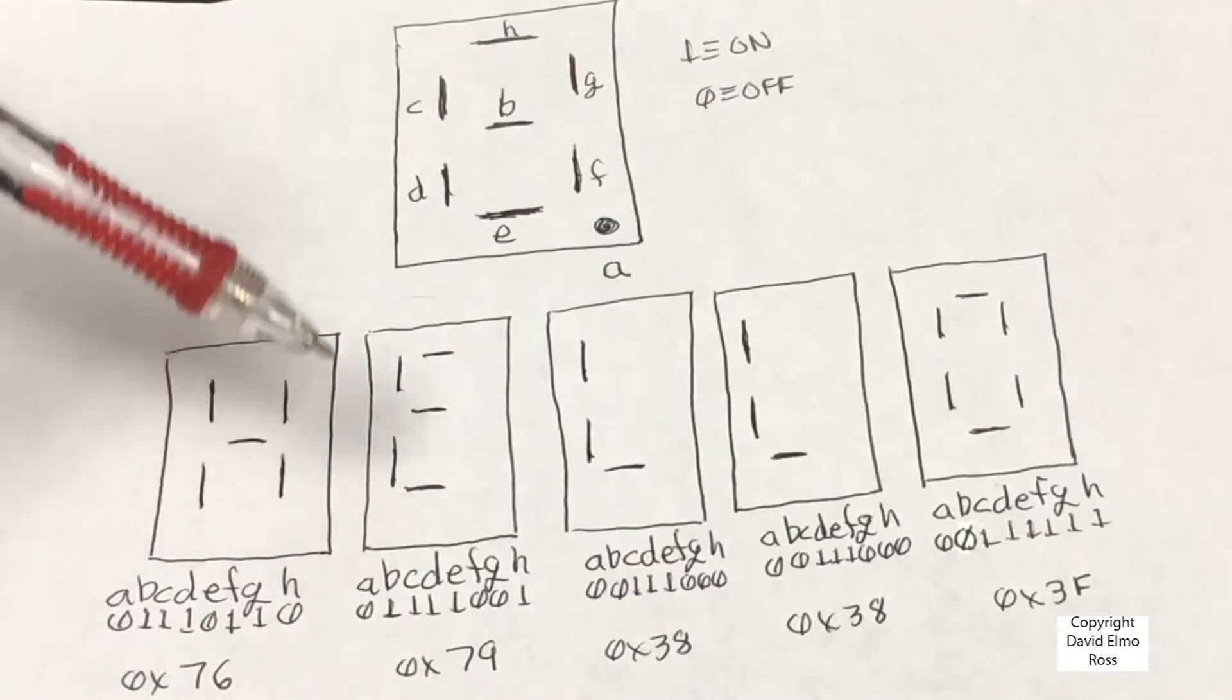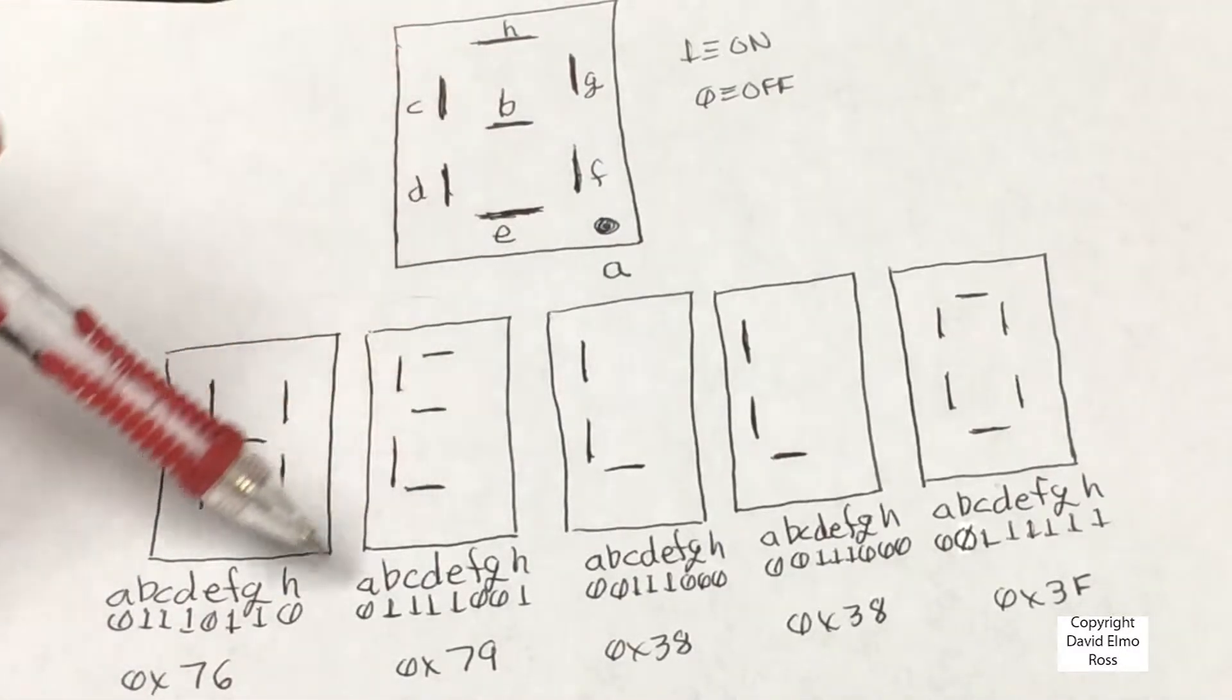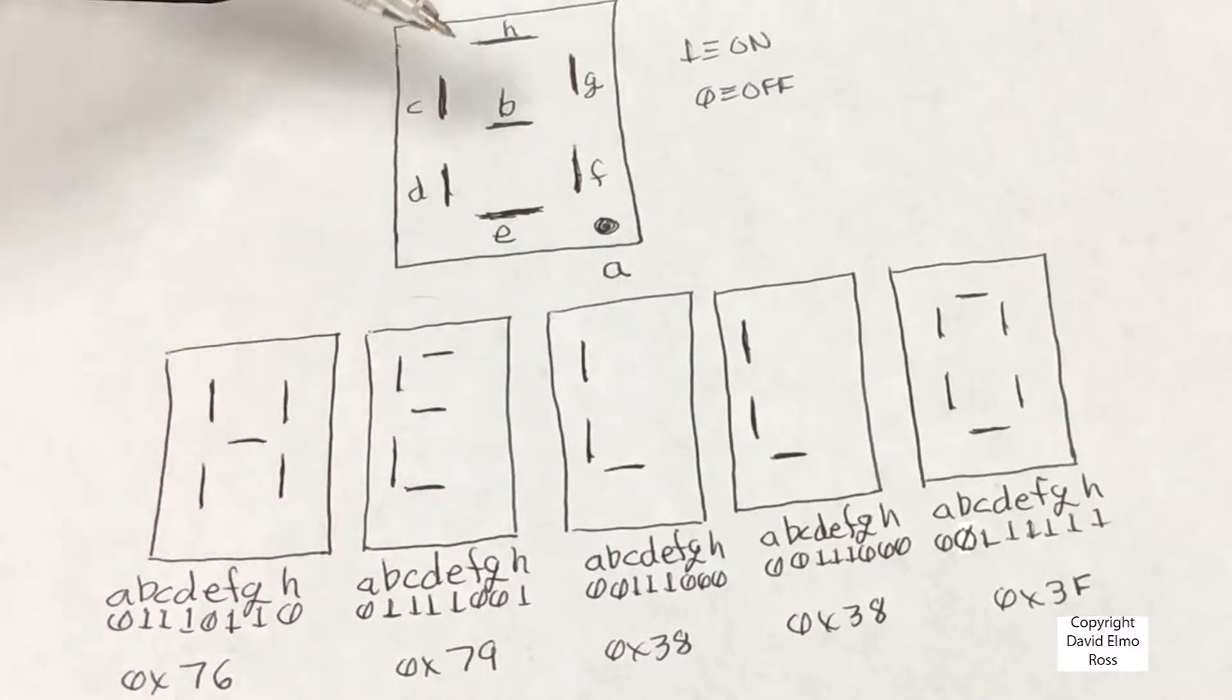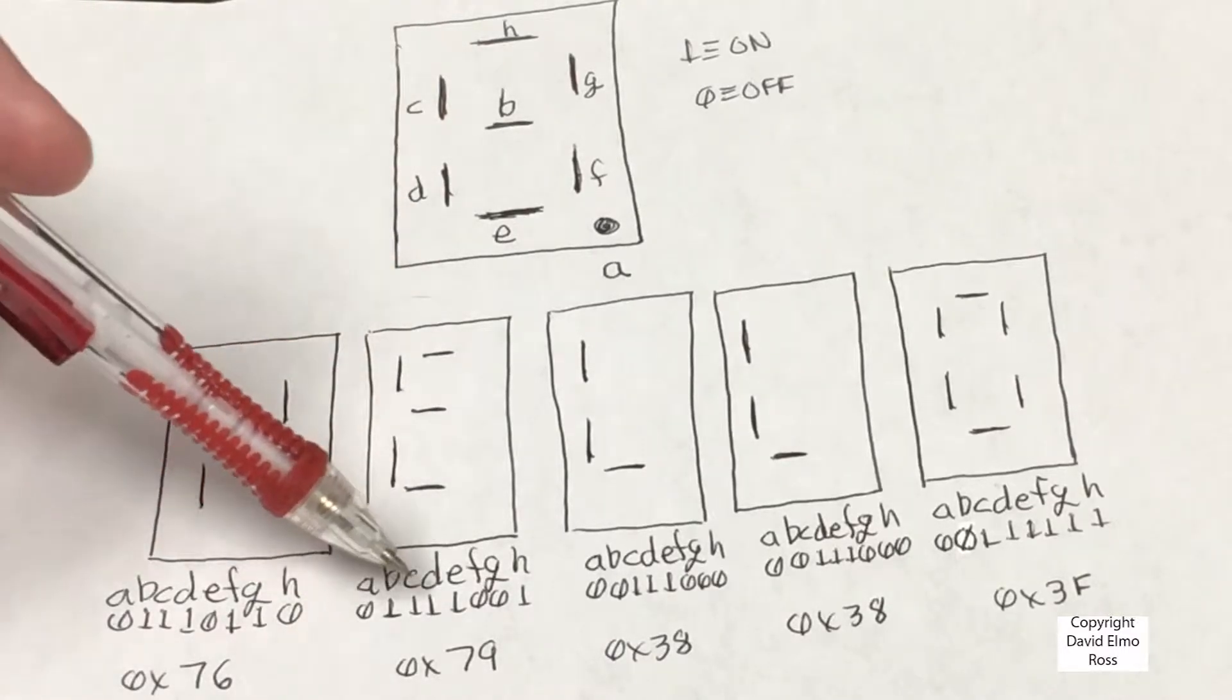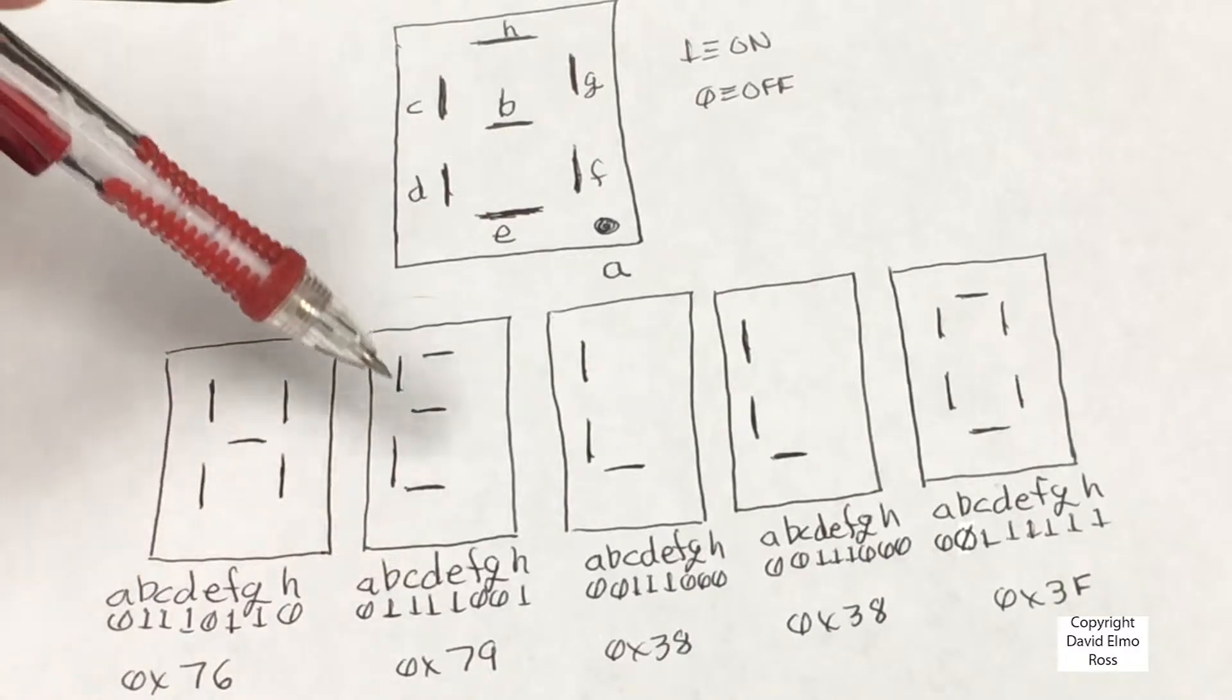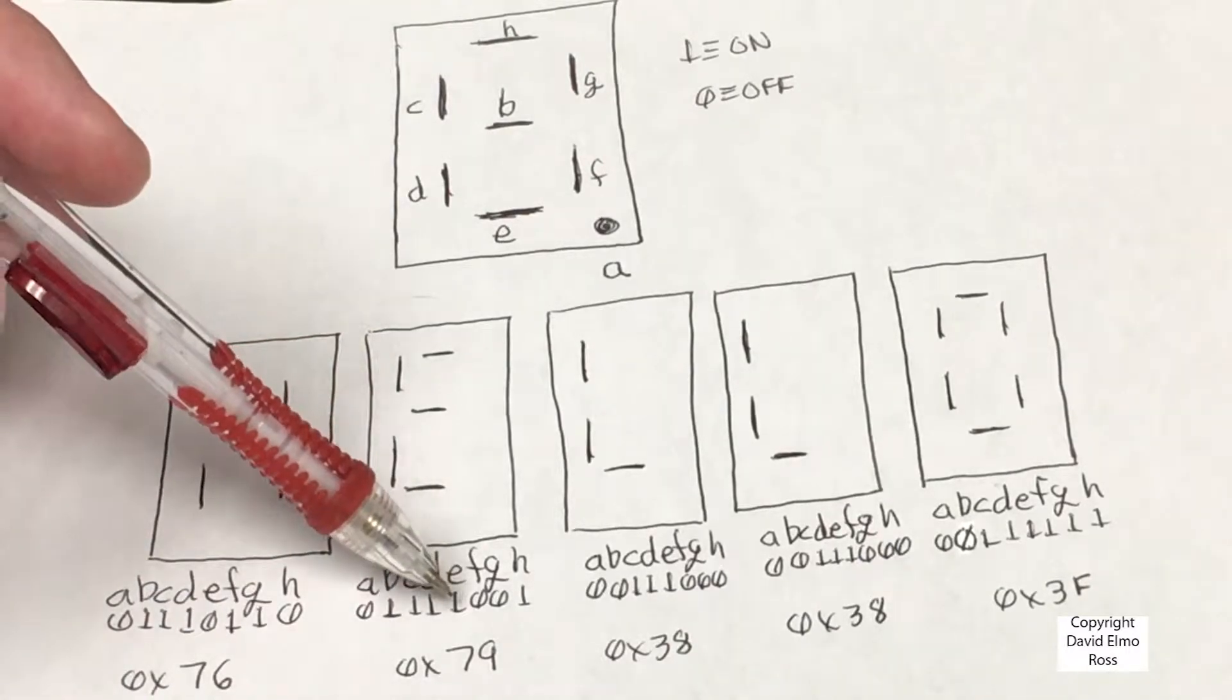And similarly you can figure out these values here, that in each case the dot is off. And for the E, this is on, this is on, this is on, so those are those three ones. And then we also have this guy on here, which is that.